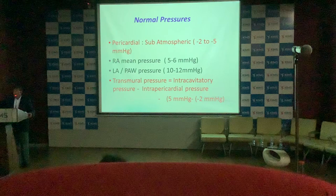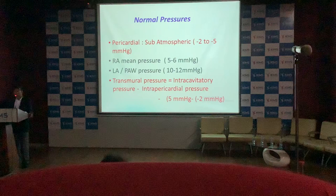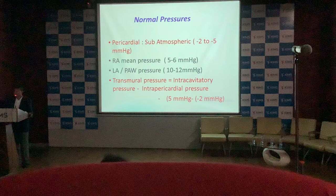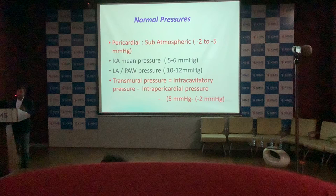Normal pericardial pressures are negative — about atmospheric minus 2 to minus 5. The transmural pressure is the gradient between the right atrial cavity pressure and intrapericardial pressure. In constrictive pericarditis, there is a lot of fibrosis, often with thickening and with or without calcification of the pericardium.